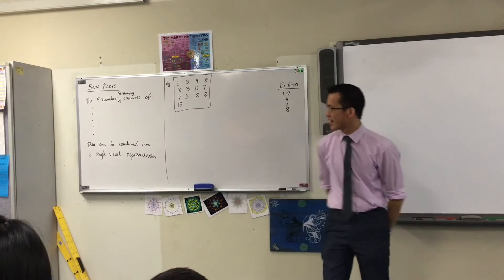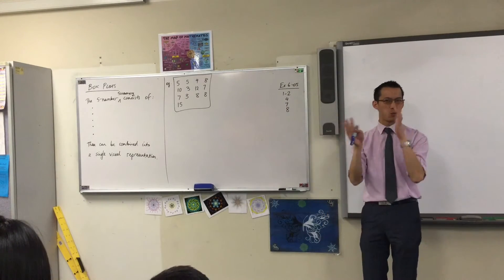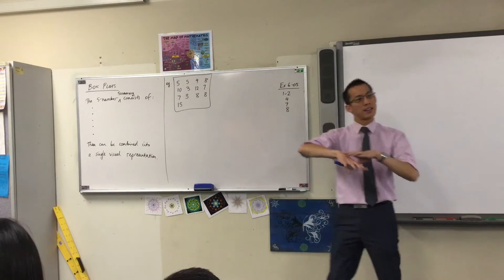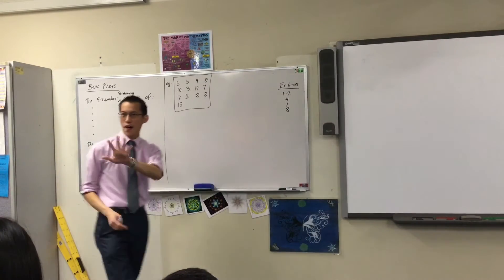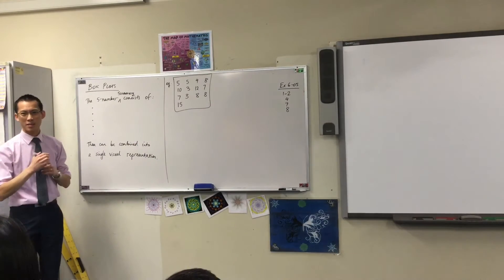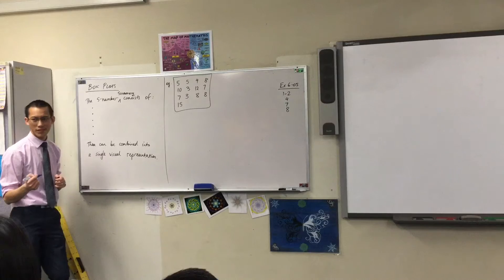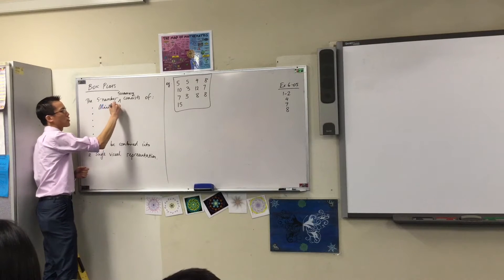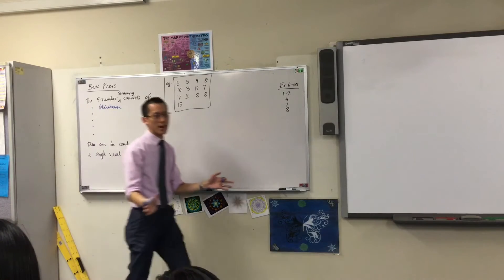The five number summary is an idea we've been looking at over the last week. It consists of five different pieces that go in to try and summarize data. Five points. I wonder if you could remember them in order. Any takers? What's the first one? What's the first number? It's the minimum, the lowest score you can see in the entire data set.